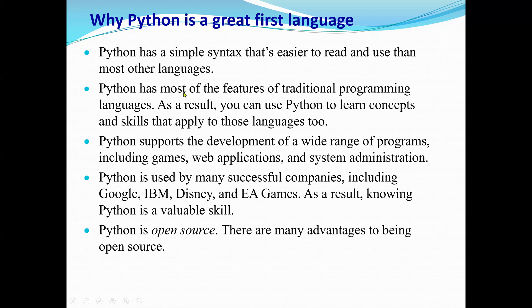Python has most of the features of traditional programming languages, including the three control structures. Python also supports object-oriented programming principles. Python supports the development of a wide range of programs including games, web applications, and system administration, because Python has many library files and packages for games, data analysis, and machine learning tasks. Python is also used by many successful companies including Google, IBM, Disney, and EA Games, because Python is open source — it's free — and has many packages available.